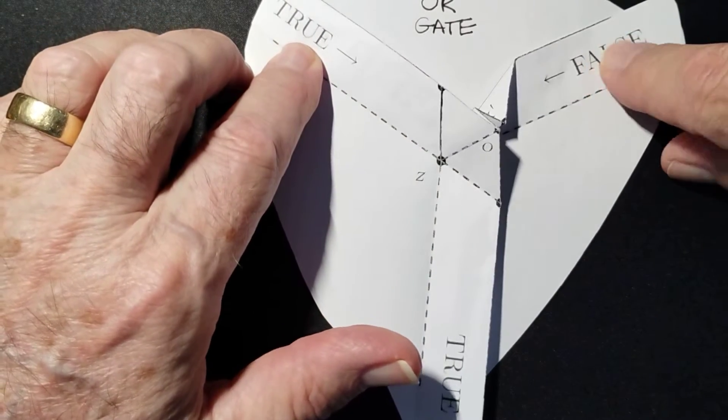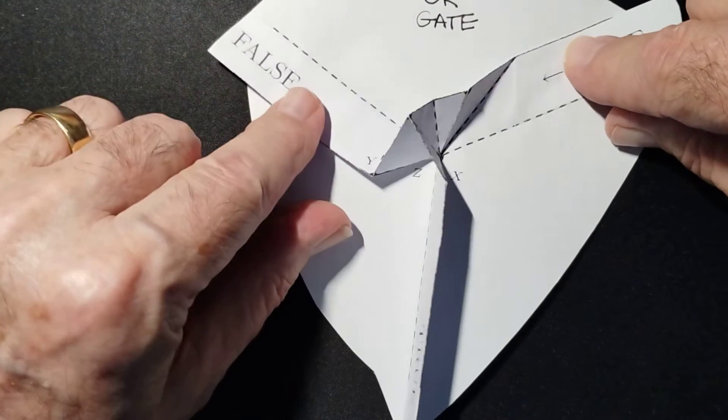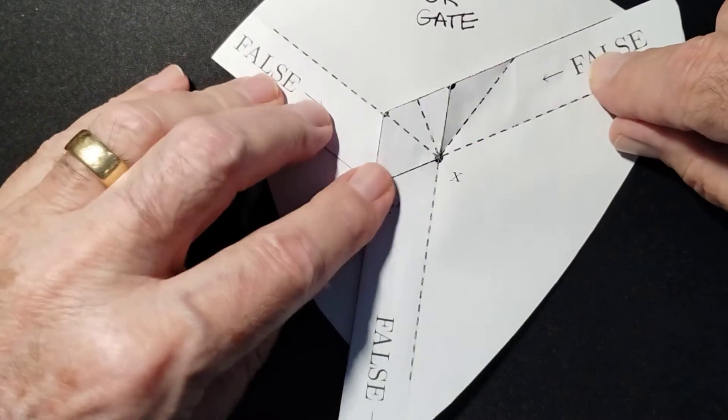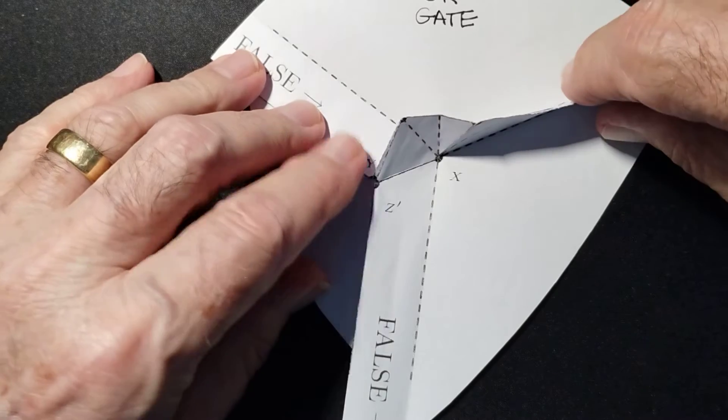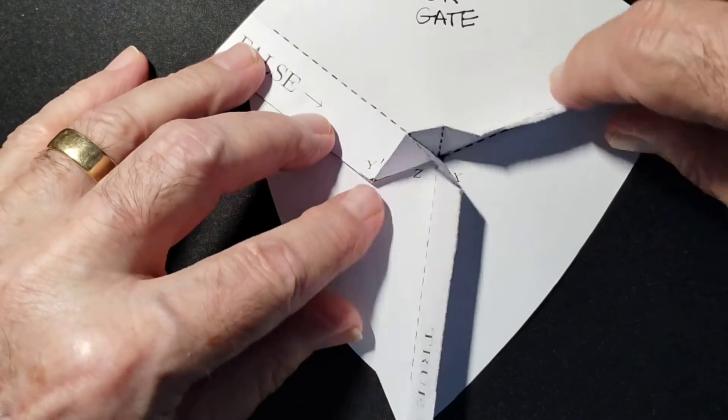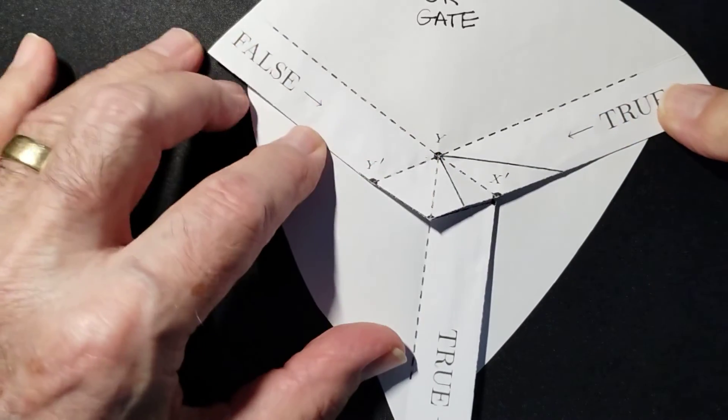So true and true or false is true, false or false is false, false or true is true. Pretty cool.